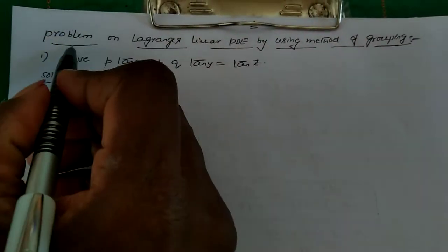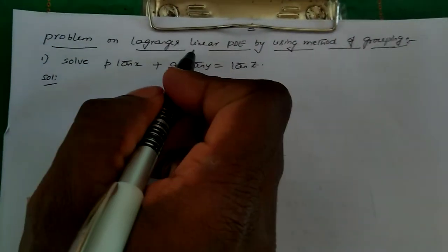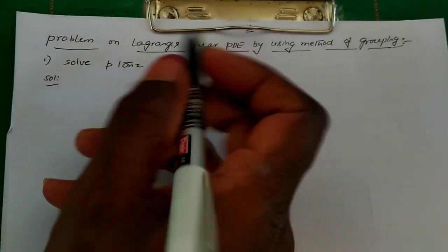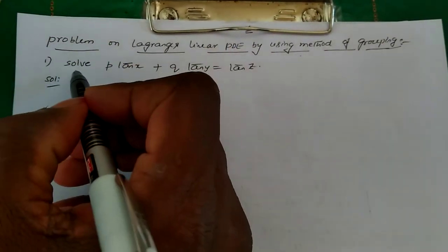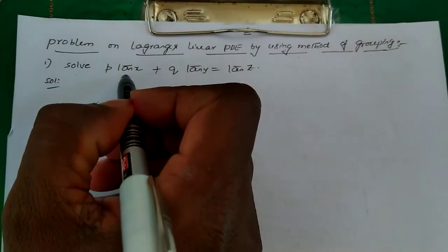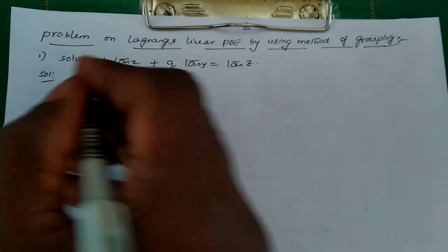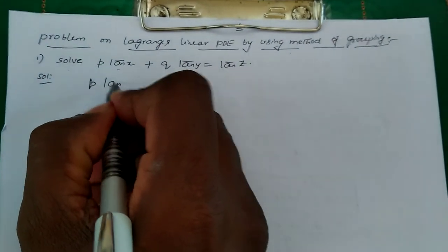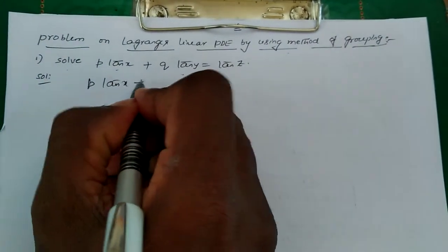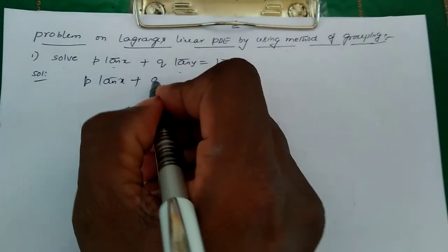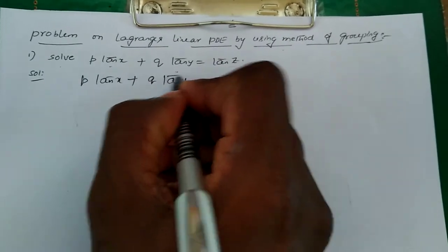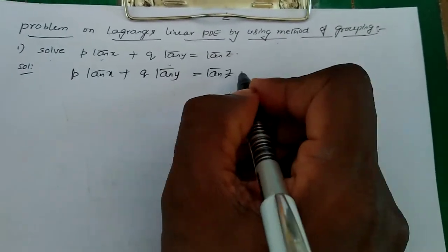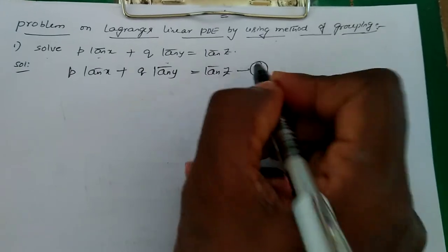In this video we will discuss the problems of Lagrangian's PDE by using method of grouping. Consider the problem: solve P tan x plus Q tan y equal to tan z. Consider P into tan x plus Q into tan y equal to tan z. This is taken as equation 1.